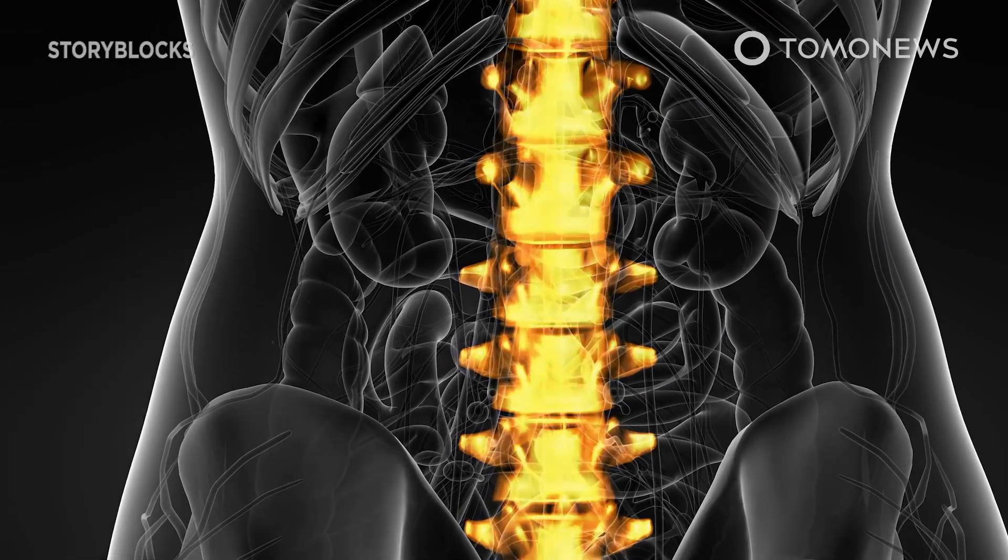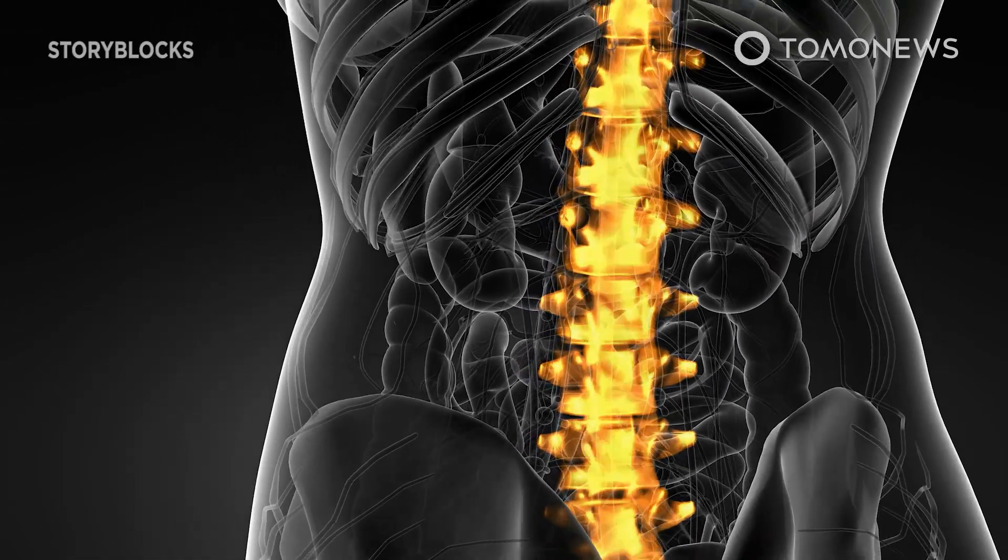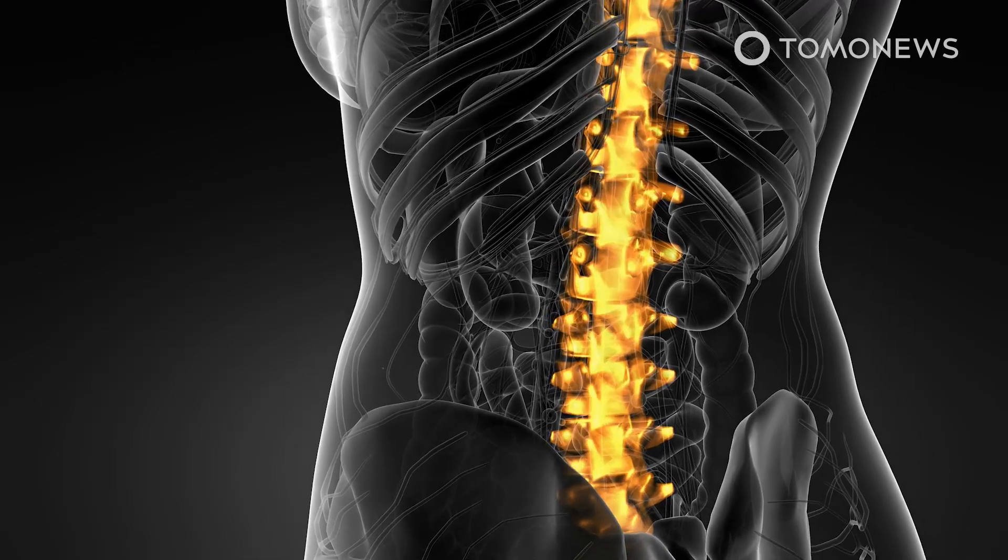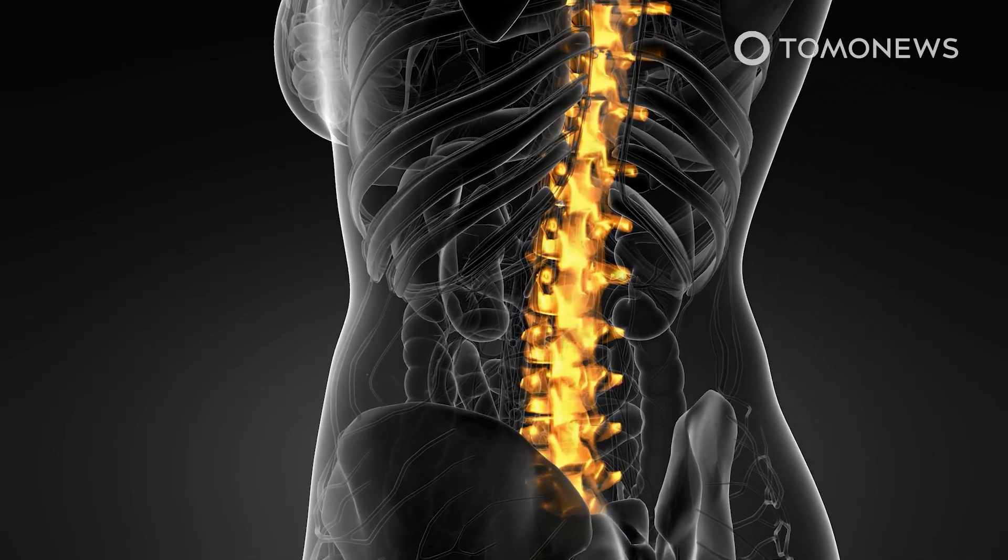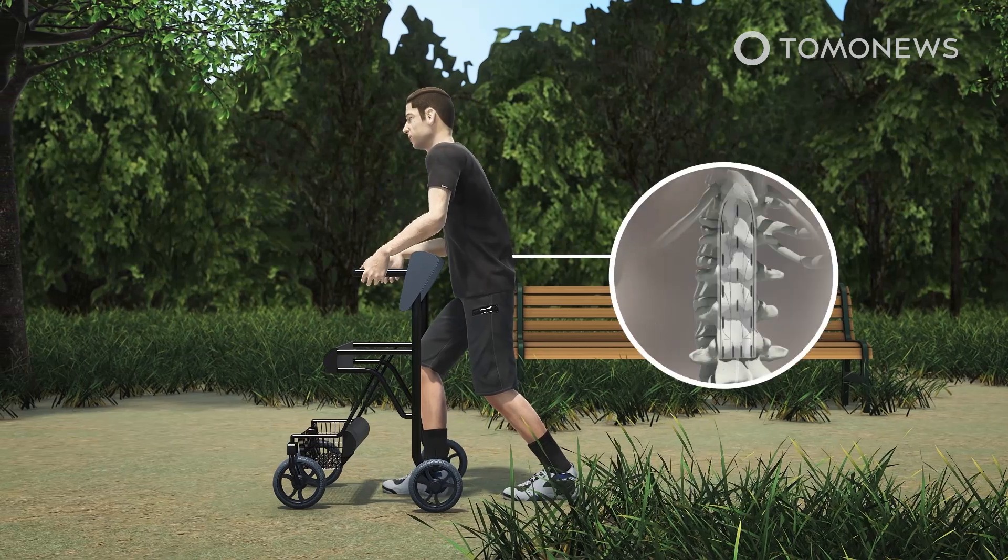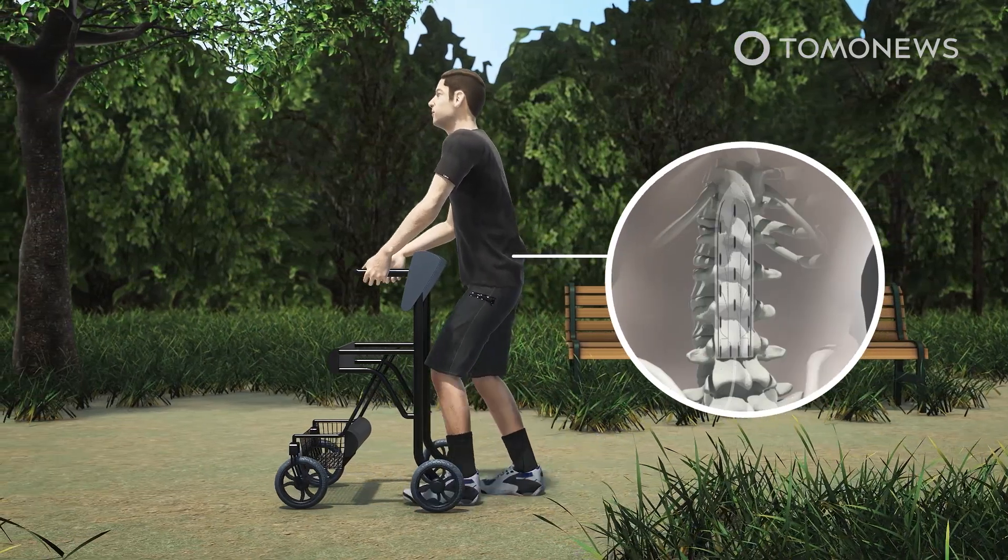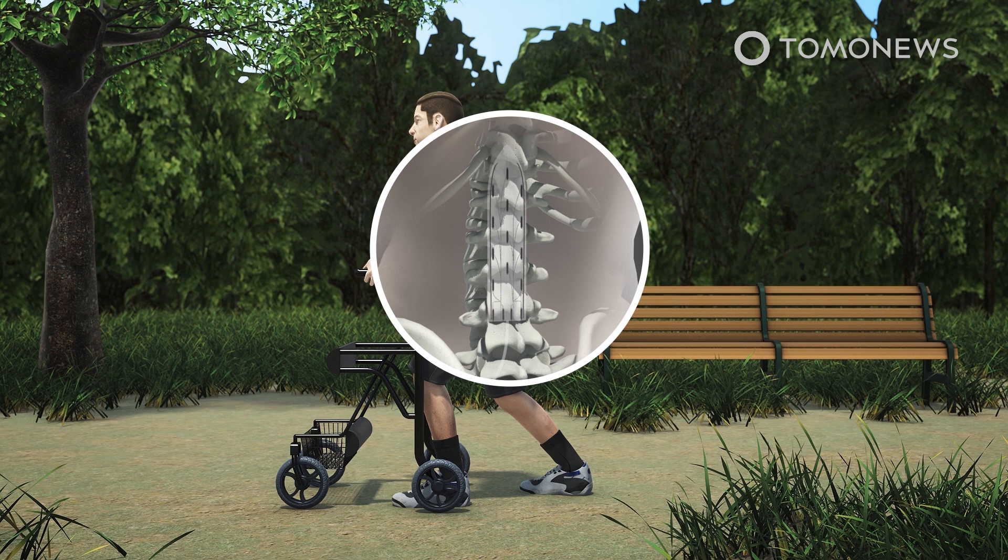Patients whose spinal columns have been severed in accidents can now walk again thanks to an amazing medical invention. The BBC reports that scientists in Switzerland have created a spinal implant system that is allowing paraplegic patients with severed spinal columns to walk and cycle.